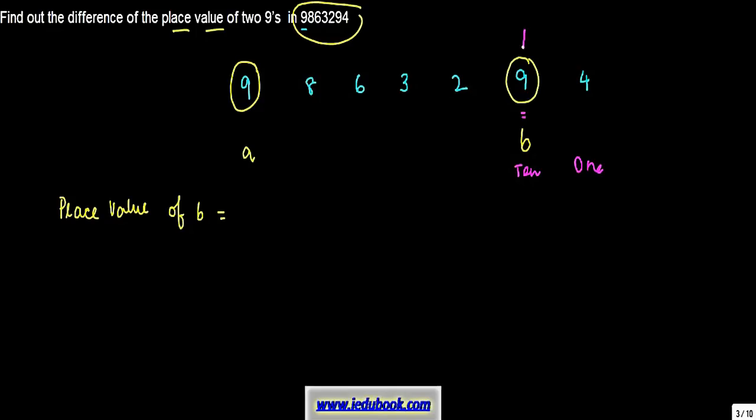To find out the place value of a particular digit, what do we do? We multiply that digit with the respective place, which is here ten. So we get 9 into 10 is equal to 90. So the place value of b, which we saw here, is 90, right?